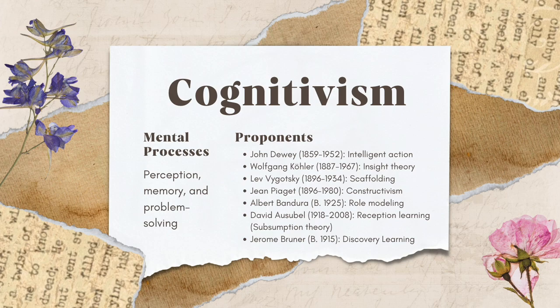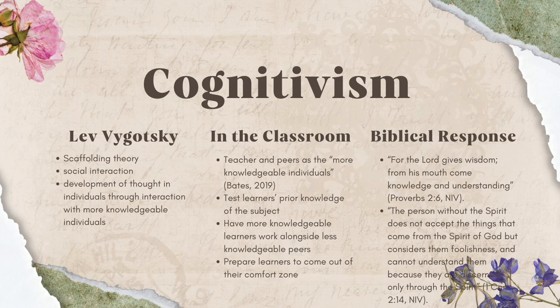Cognitivism, on the other hand, emphasizes the importance of mental processes such as perception, memory, and problem solving in learning. Proponents of this theory include Jean Piaget and Lev Vygotsky, who highlighted the role of social interaction in cognitive development. Vygotsky's scaffolding theory emphasizes the importance of social interaction in the development of thought in individuals through interaction with more knowledgeable individuals. In a classroom, this theory can be seen in a teacher providing guidance and support to students as they learn, allowing students to work with others to solve problems and promote a collaborative learning experience.